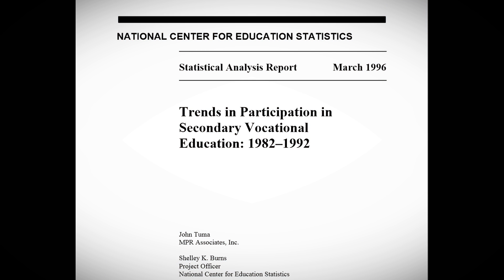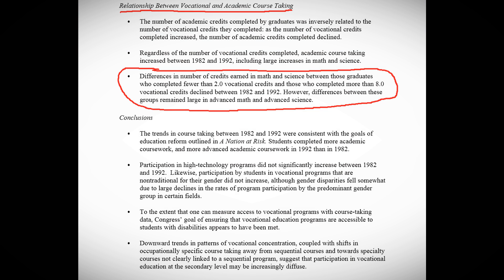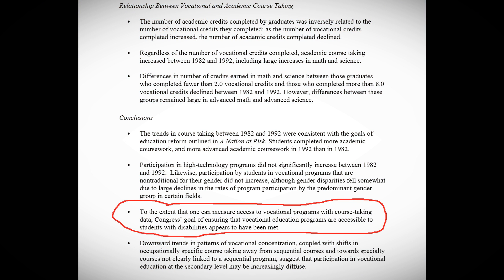One report provided some interesting changes from 1982 to 1992 with regard to vocational education. The bulk of the report looks at the relationship between vocational and academic course taking. Specifically, they began to look at the difference in math, advanced math, and advanced science scores for people taking fewer than two vocational credits versus more than eight vocational credits. The report also reviewed whether or not vocational programs were available to students with disabilities, predating No Child Left Behind.